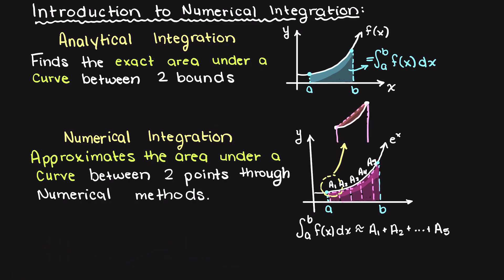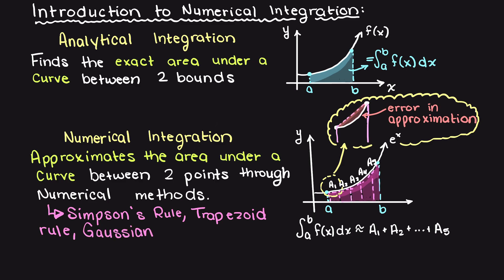Some numerical integration techniques that can be used to approximate this area is Simpson's rule, the trapezoid rule, or Gaussian quadratures. Much like our other numerical methods that we've learned about in the past, this technique is useful when dealing with complex functions or when the integrals cannot be evaluated analytically.